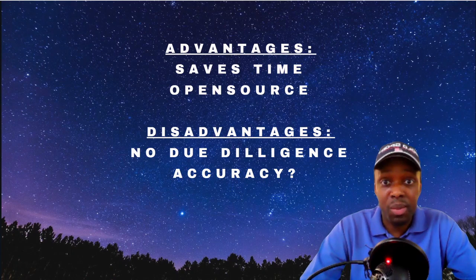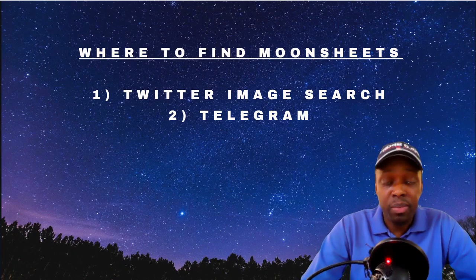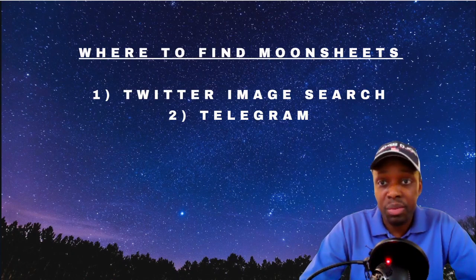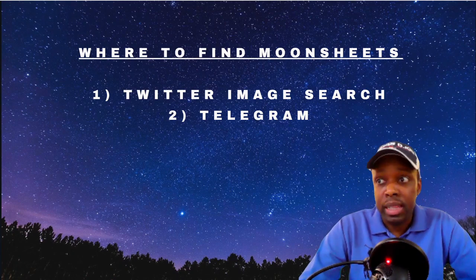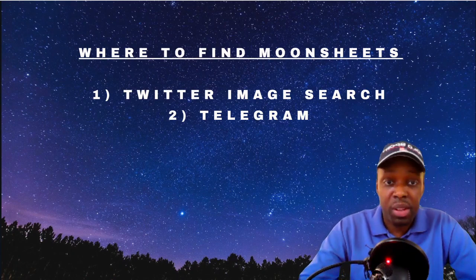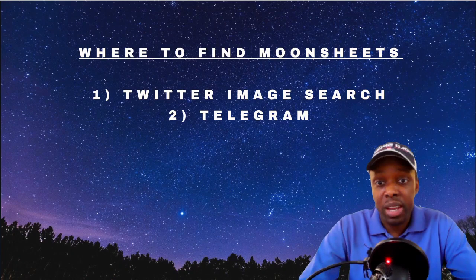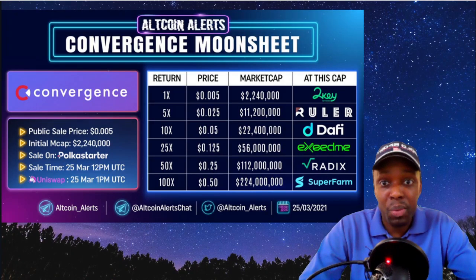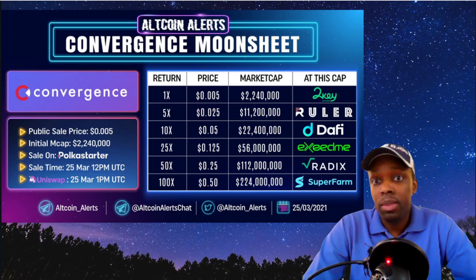The moon sheet could also be completely wrong. Where to find moon sheets: I find them on Twitter — I'll search for example 'Convergence moon sheet' or 'Polkastarter moon sheet,' then click on Images or Media and scroll through. The second place is Telegram groups, where people will post them.